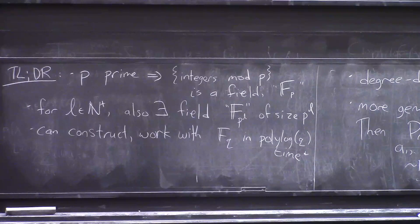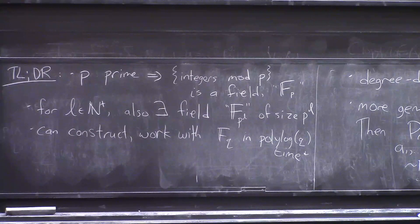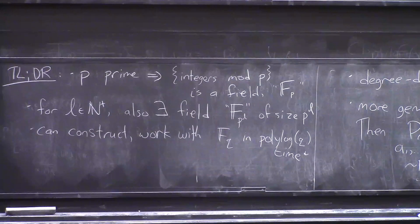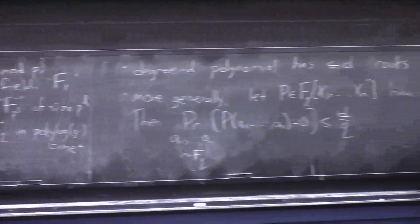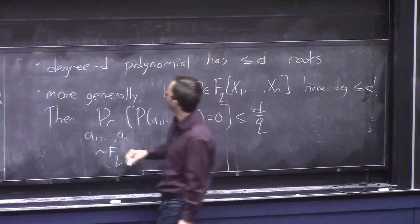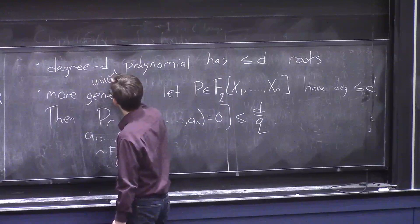So that's fields. And now to polynomials, there's really only one super key fact. It's this key fact, that if you have a degree d polynomial, it has at most d roots. Where a root is also called a zero, it's an input that makes the polynomial output zero. I should add a key word here, which is univariate, meaning having just one variable.